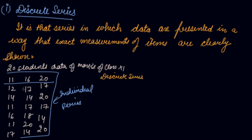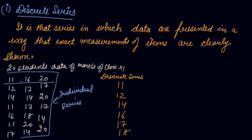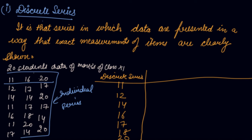To build the discrete series, arrange the marks in ascending order. The lowest mark is 11. Then 12. No one has 13. Then 14. No one has 15. Then 16, 17, 18. No one has 19. Then 20. No one is above 20. So the discrete series lists only the marks that actually appear in the data.